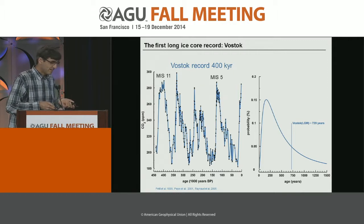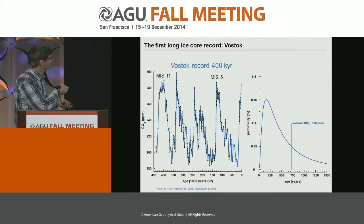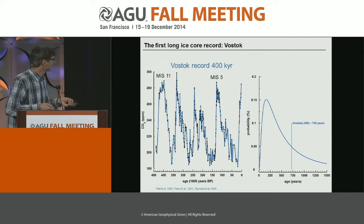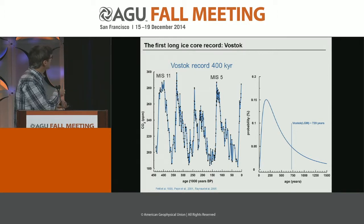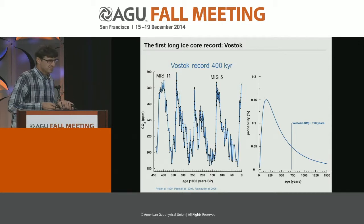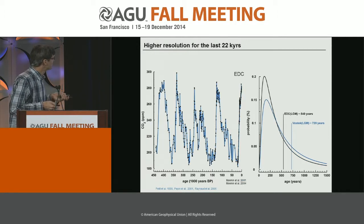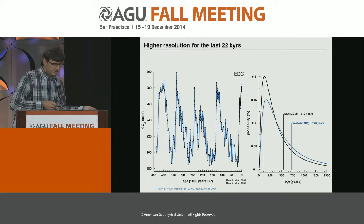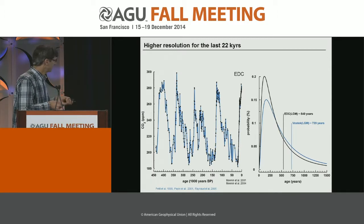In the past, drill sites were often chosen to provide very long records, like the famous Vostok record, which informed us about the last four glacial cycles. CO2 varied during glacials around 180 ppm and during interglacials up to 280 ppm. Vostok has a really broad age distribution, so it is not suitable for highly resolved records. But people wanted not only to know the concentration, but the processes behind, and so the race began to come up with higher-resolved records.